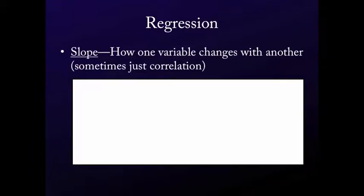So slope, just like correlation, measures how one variable changes with another. And if you only have a single term in your regression equation, this is just the correlation. Depending on how you standardize it and how you do things, oftentimes the beta coefficient just is your correlation.